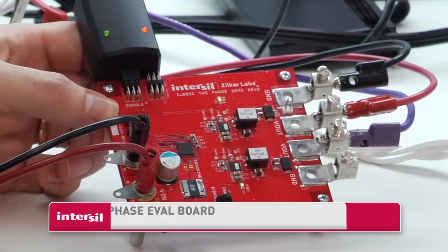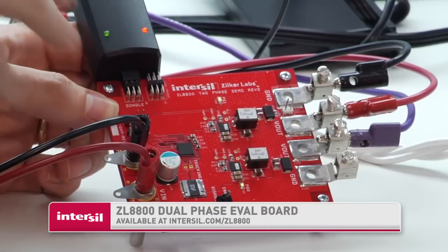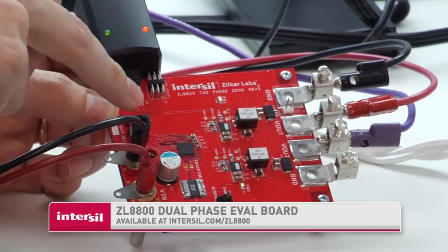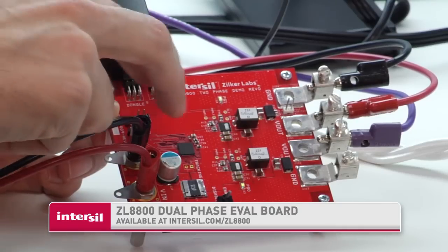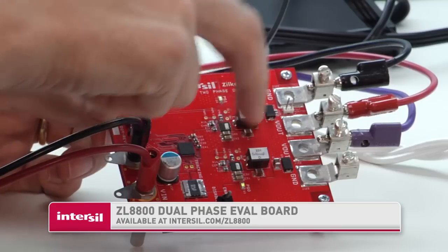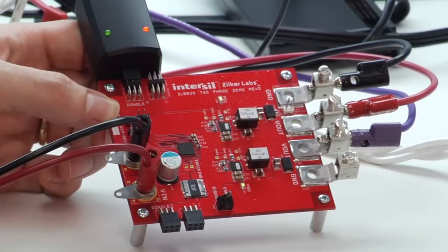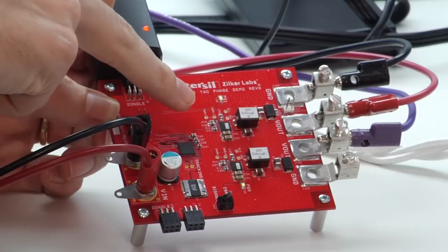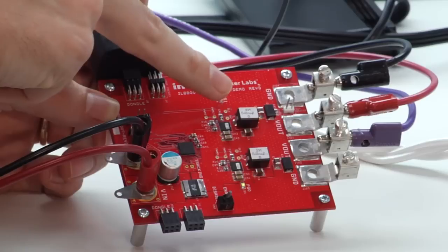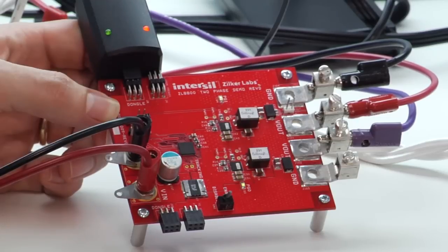So what I have here is the evaluation board of the Zio 8800. This is the dual phase board. We have a single Zio 8800 IC on this board and we have the two separate channels. Now these are tied together to a single output voltage, so it operates as a dual phase converter. The power stages that are shown here are using Dr. Moss devices and you can see the output inductor and the output capacitors.